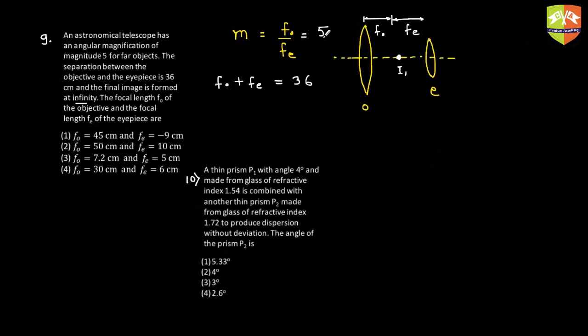From fo = 5·fe, we get fe = 6 cm. I'll mark option 4 and move ahead — I don't even need to find fo because fe has a unique value across all four options. Anyway, fo + fe = 36, so fo = 30 cm.